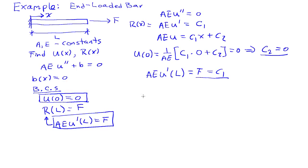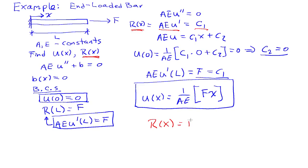So my final solution then is u of x is equal to one over AE times F times x. And we're also asked to find what the internal force R of x is. And R of x is up here. It's equal to AE u prime, which equals C1. So I have R of x is equal to F.